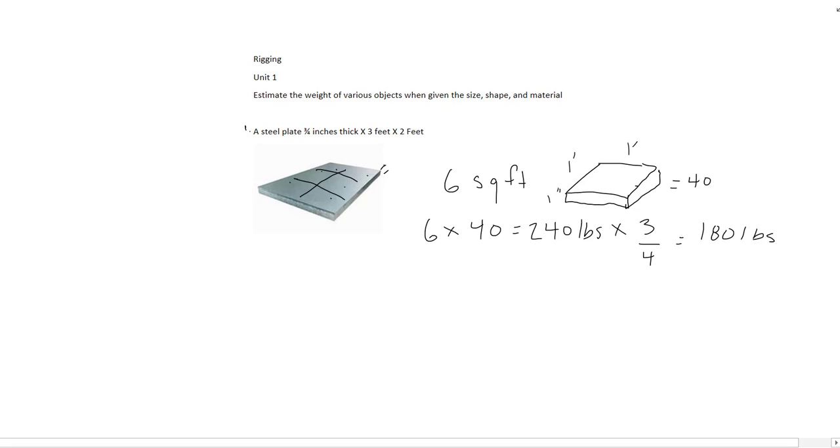So if this plate was, say, 2 inches thick, we would have taken our 240 and then multiply it by 2, and we would have gotten 480 pounds. It would have been twice as much as a 1 inch plate. We're looking for a number smaller than that 240 pounds that we got.